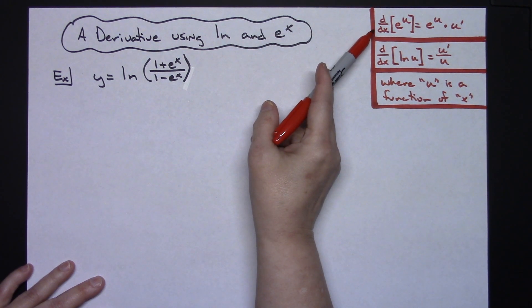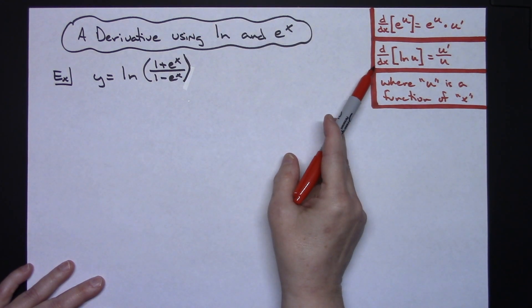The derivative of e to the u is going to be e to the u times u prime where u is a function of x, and the derivative of the natural log of u is u prime over u, again with u being a function of x.